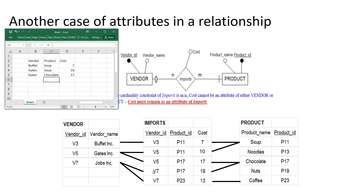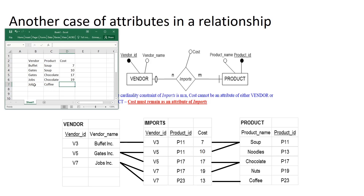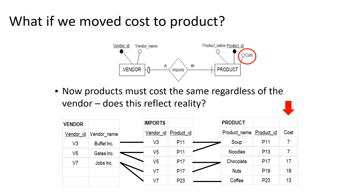Jobs Incorporated has product ID P17, which is chocolate, for a cost of $19. And Jobs Incorporated has product P23, which is coffee, for a price of $13. So this imports table is our gerund, which is decomposing the many-to-many relationship. Since cost is an attribute of the relationship, that's where that attribute is being stored.